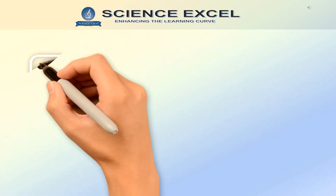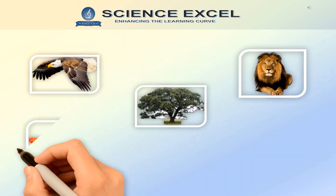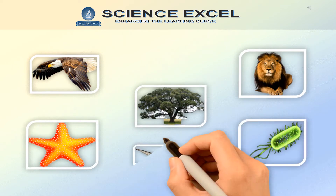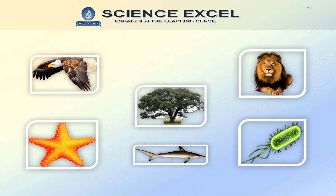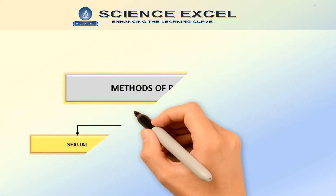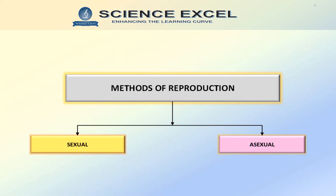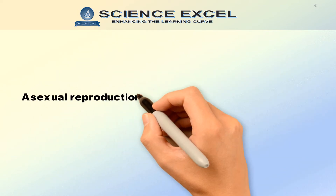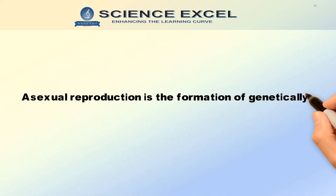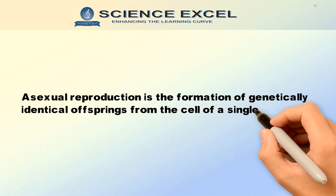The existence and propagation of all life on our planet is related to the ability of organisms to reproduce. Each individual organism exists as the result of reproduction. The methods of reproduction can be identified into two main types: sexual and asexual. Asexual reproduction is the formation of genetically identical offspring from the cell of a single parent.